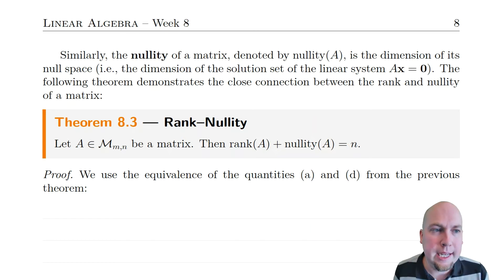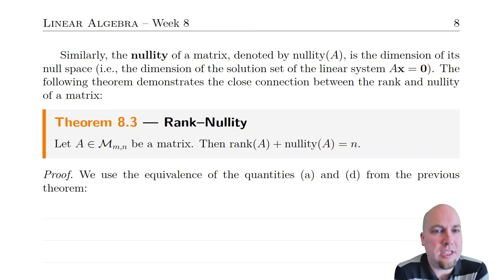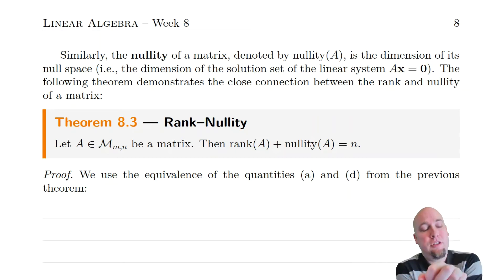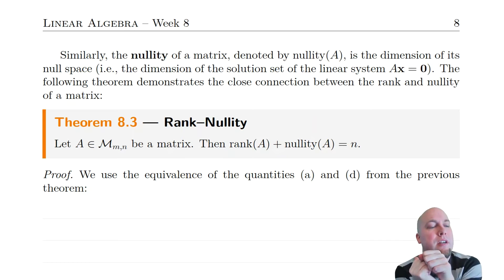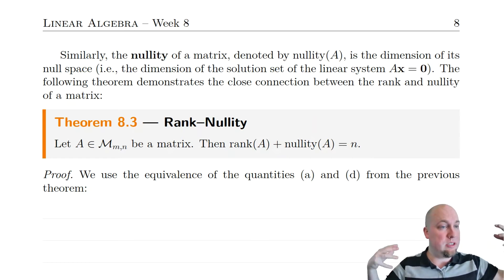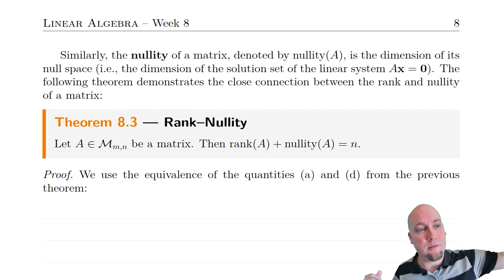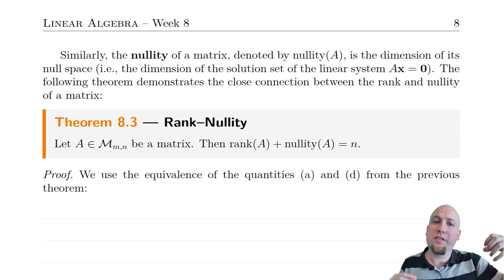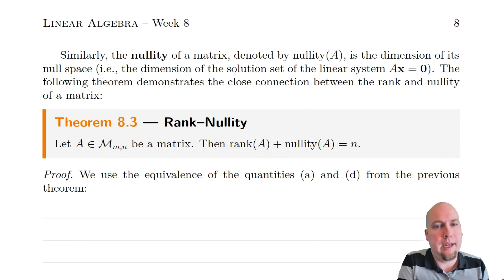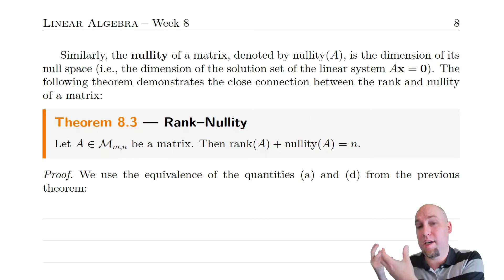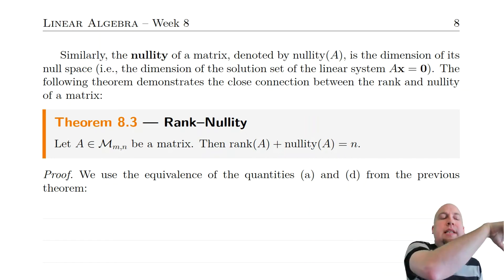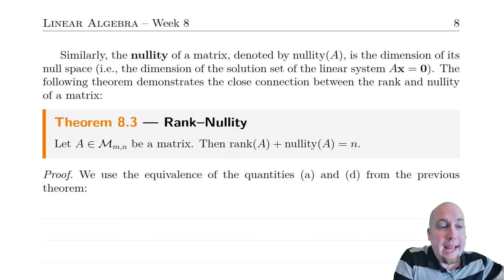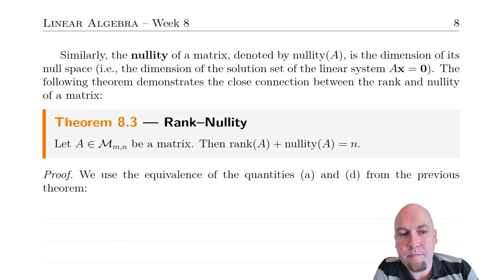The nullity sort of measures how degenerate that matrix is — how much stuff is getting squashed down. If the matrix is squashing everything down to just the zero vector, the nullity is going to be n, squashing all n dimensions into the zero vector. If the matrix is invertible and squashing nothing down, the nullity is zero. So intuitively, nullity is very complementary to the rank. The rank measures non-degeneracy — how much information is being kept — while nullity measures how much stuff is being squashed away, how many dimensions are lost when you multiply by matrix A.